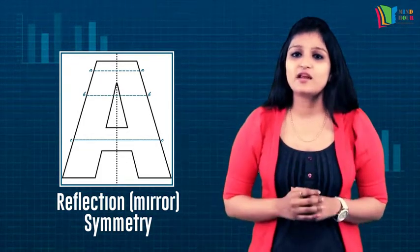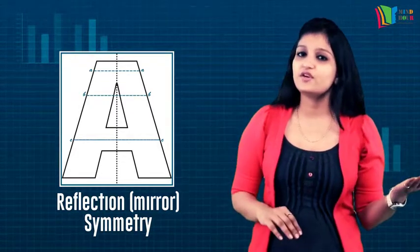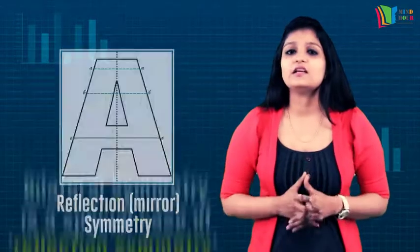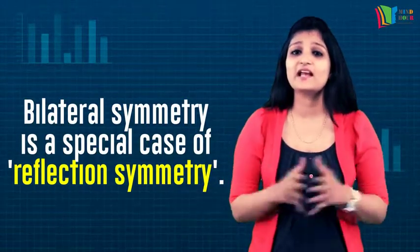The axis of symmetry separates the figure into two parts, one of which is the mirror image of the other part. The simplest case of reflection symmetry is known as bilateral symmetry.